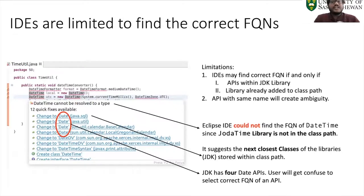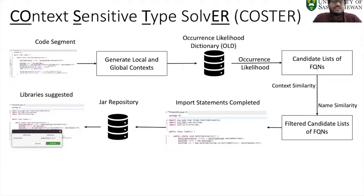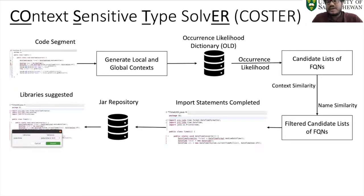However, in that situation, APIs with the same name will still create ambiguity. We are proposing the tool CoStor, which takes code segments, generates local and global context, sends it to the occurrence likelihood dictionary, and calculates the occurrence likelihood and context similarity using MCY2 to find the candidate list of FQNs.